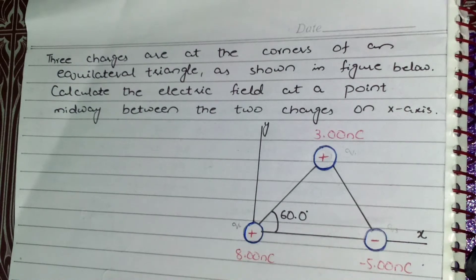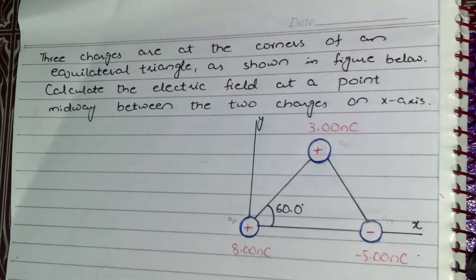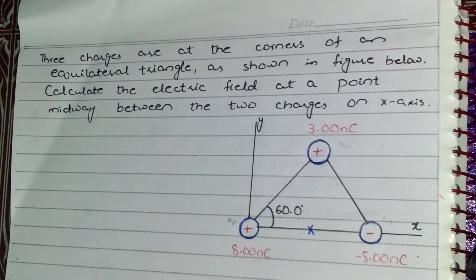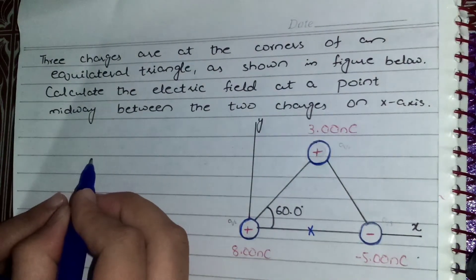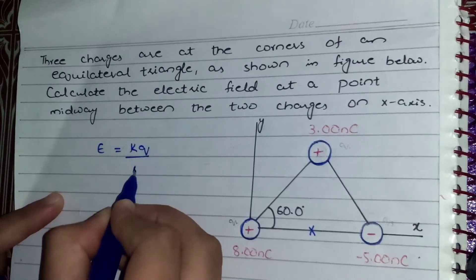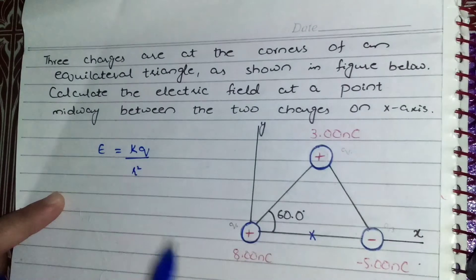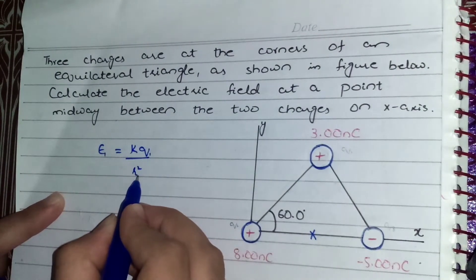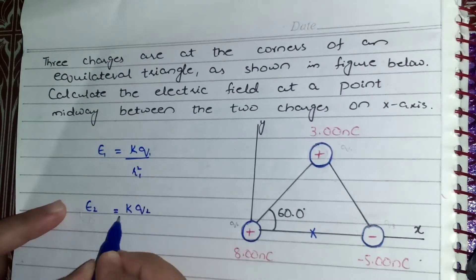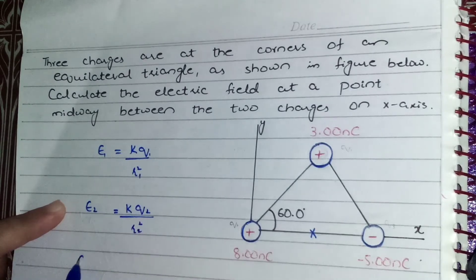We are to find out the electric field at the point midway between the charges on the x-axis. The equation for electric field is E = kq/r². Since there are three charges, we will have E1 = kq1/r1², then similarly a second electric field for charge 2, and a third electric field for charge 3.